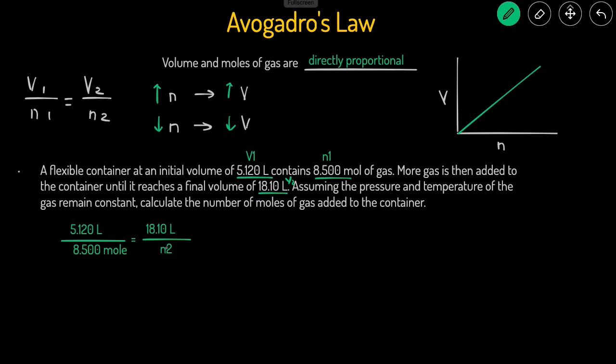Since the variable's on the bottom, what we're going to do is cross-multiply. Whenever your variable's on the bottom of the fraction, start by cross-multiplying.